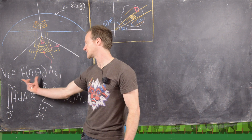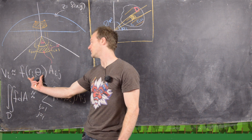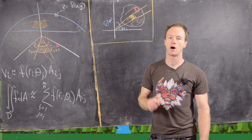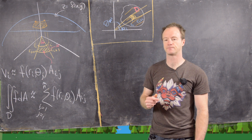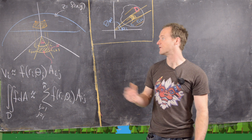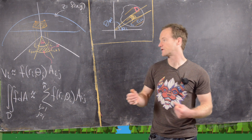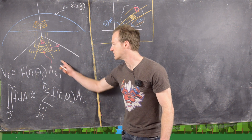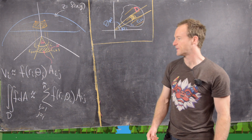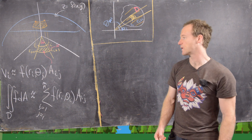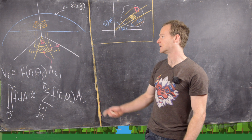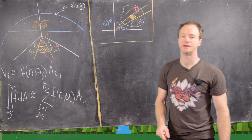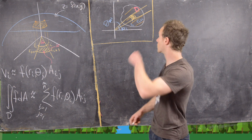This volume is approximately f(r_i, θ_j) times the area of this region — a portion of an annulus. We use approximately because we're just taking some value of f. But if the region is really, really small, then f is not varying very much on it, which is why we get this approximate equality. Now we want to calculate this A_ij component so we can turn the sum into an iterated integral.